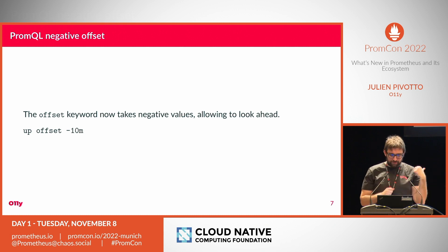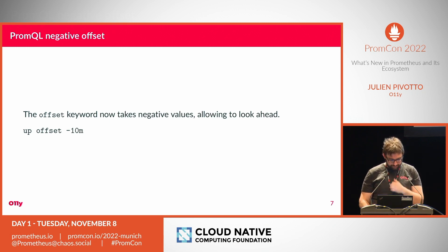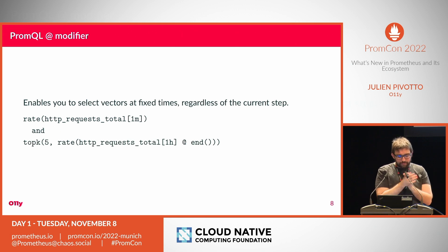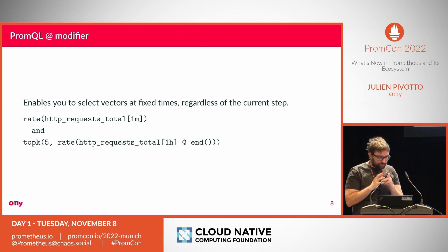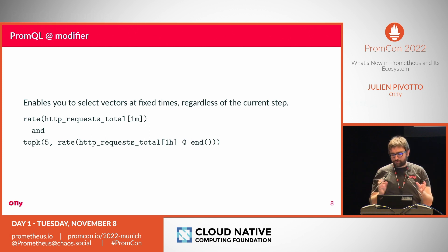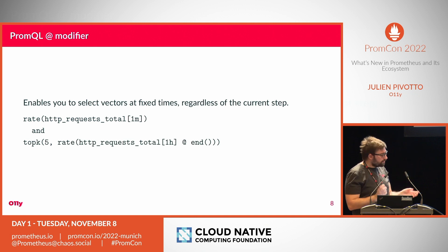Negative offset is now stable — if you are using a recent Prometheus version you don't need to enable any feature flag. During the last year it was still behind a feature flag but now it is generally available. There is also the @ modifier, which is like offset in PromQL but gives you a fixed time — you can select a metric at a fixed time.